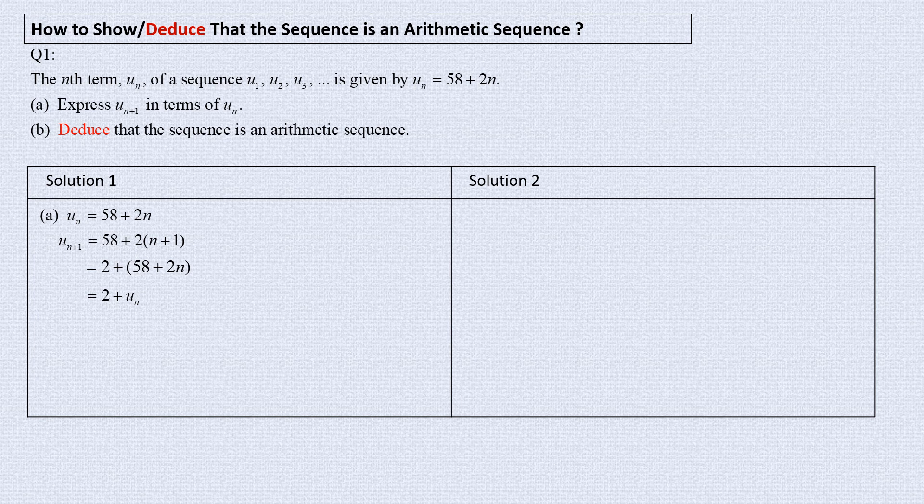Part B. Now we want to deduce that it is an arithmetic sequence. With this general relation between any two successive terms, we have shown that each is a constant equal to 2. So, our conclusion is, it is an arithmetic sequence.